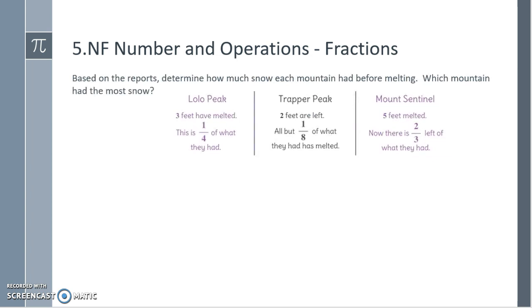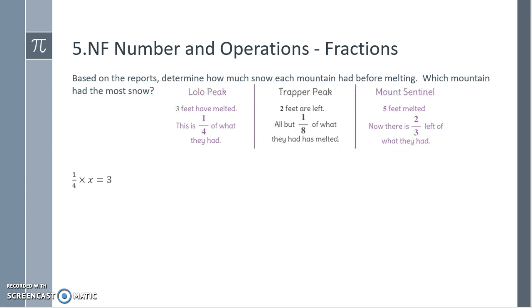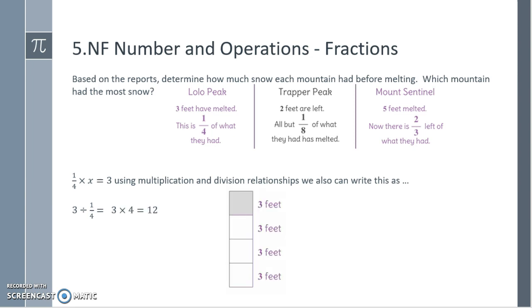Based on the reports, determine how much snow each mountain had before melting. Which mountain had the most snow? Let's start with Lolo Peak. Three feet have melted. This is a fourth of what they had. So a fourth of, we're not quite sure, is 3 feet. Using multiplication and division relationships, we can also write this as 3 divided by 1 fourth, which we know is 3 times 4, which is 12. I want to know how many 1 fourths can fit into 3.